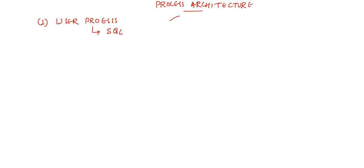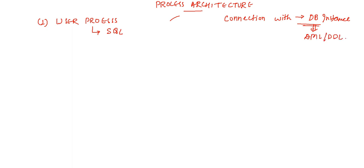A user process is also started when a database user or a batch process connects to a database instance. Once you establish a connection with the database instance, then only you will be able to perform all the DML, DDL and transactional operations. As soon as you are not connected with the database instance, you won't be able to do any type of transactions. Connection establishment is very important and this can take place for the first time with the help of the listener process.